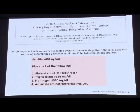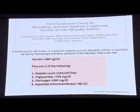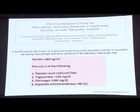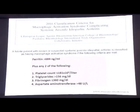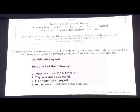The latest classification criteria for MAS complicating systemic juvenile idiopathic arthritis — which is a classification criteria, not a diagnostic criteria — concludes that ferritin more than 684 ng/mL plus any two of the following: platelet count less than 1.81 lakhs, triglycerides more than 156, fibrinogen less than 360, or AST more than 48. This should be used as a rough guide, not as the sole criteria to diagnose MAS.